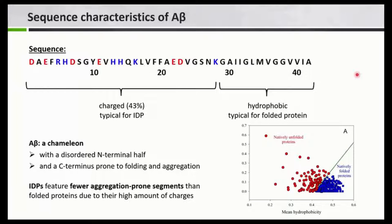A-beta is like a chameleon, because we have this N-terminal disordered part and a C-terminal half which is pretty hydrophobic and has a high tendency to become folded. This really makes the characteristics of this peptide — the fight between the N-terminal half, which wants to be unfolded, and the C-terminal half, which wants to be folded.